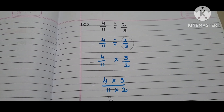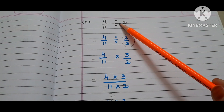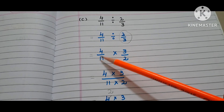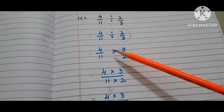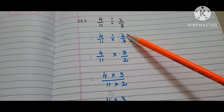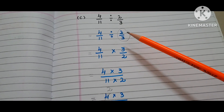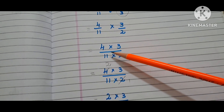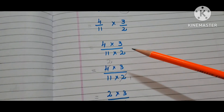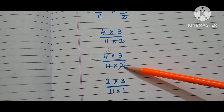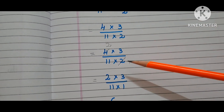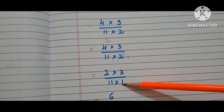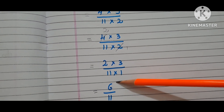Now let us move to the C bit. The question is 4/11 divided by 2/3. First step: copy down the first fraction 4/11. Instead of the division symbol, write the multiplication symbol and write the reciprocal of 2/3, that is 3/2. That is 4 times 3 by 11 times 2. Here we can reduce: 2 ones are 2, 2 twos are 4. So we have 2 times 3 by 11 times 1. The answer is 6/11.